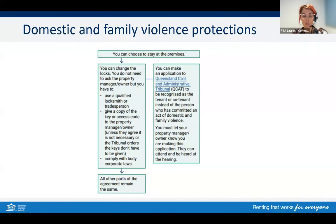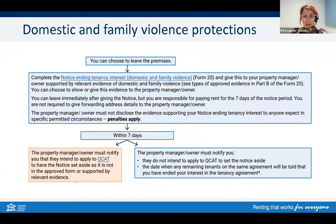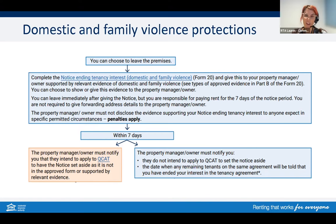The flowchart provides an option path for a tenant who wants to stay at the property, but due to time constraints I'm not going to run through that today. In today's scenario, Alex wants to leave. Alex must provide the Notice Ending Tenancy Interest form along with supporting evidence such as a domestic and family violence report. Within seven days, you the property manager must advise whether you intend to go to QCAT to have the notice set aside. You cannot make judgment on whether Alex is experiencing DFV — you can only go to QCAT if the notice doesn't comply with requirements, for example if supporting evidence wasn't completed by an authorised person.